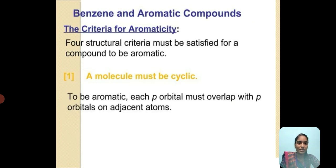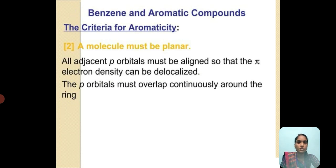The criteria for aromaticity: A molecule must be cyclic. To be aromatic, each p orbital must overlap with the p orbital of an adjacent atom. A molecule must be planar. All adjacent p orbitals must be aligned so that pi electron density can be delocalized, with p orbitals overlapping continuously around the ring.